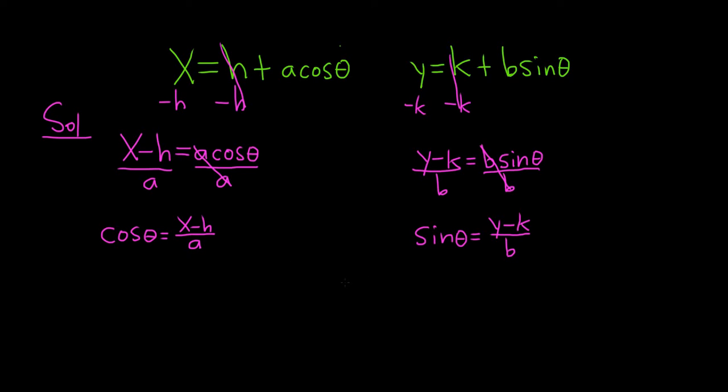Okay, now that we've solved for sine and cosine, we use a familiar identity. Recall that cosine squared plus sine squared equals 1. Let's write it out: cosine squared plus sine squared equals 1.